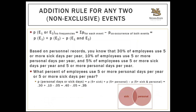These estimates are based on limited information but represent predictions using past data. When you do not have access to frequencies, you need the formula for two non-exclusive events: take the sum of probabilities for each event occurring separately and subtract the probability of co-occurrence — the middle of the Venn diagram — to avoid double counting events that meet both criteria.